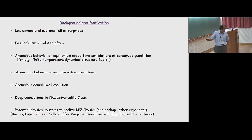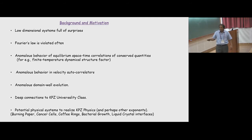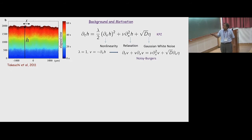Low-dimensional systems are full of surprises — you have violations of Fourier's law, anomalous behavior in spatiotemporal correlations and autocorrelations, anomalous domain wall evolution. Low-dimensional classical systems also have deep connections to KPZ class. These are the motivations, and we hope these systems can be used as potential systems to realize KPZ physics. The KPZ equation has nonlinearity, relaxation, and noise; its derivative is the noisy Burgers equation, which is slightly more relevant for our case.